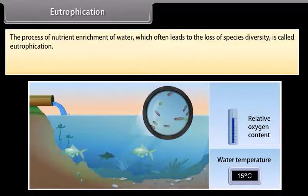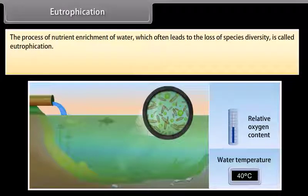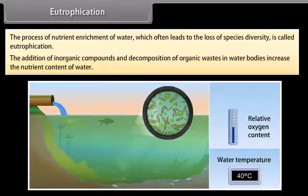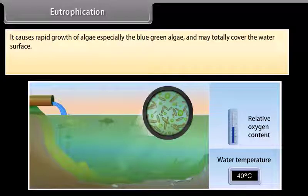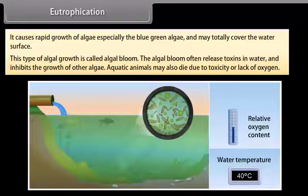Eutrophication. The process of nutrient enrichment of water, which often leads to the loss of species diversity, is called eutrophication. The addition of inorganic compounds and decomposition of organic wastes in water bodies increases the nutrient content. This causes rapid growth of algae, especially blue-green algae, which may totally cover the water surface — this type of algal growth is called algal bloom. The algal bloom often releases toxins in water and inhibits the growth of other algae. Aquatic animals may also die due to toxicity or lack of oxygen.